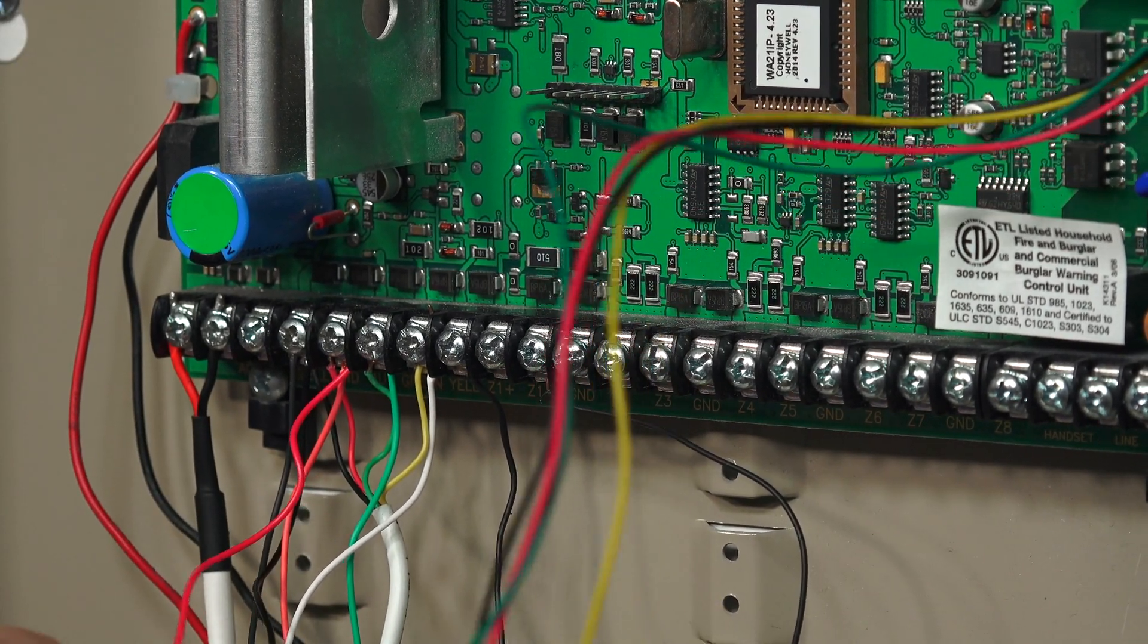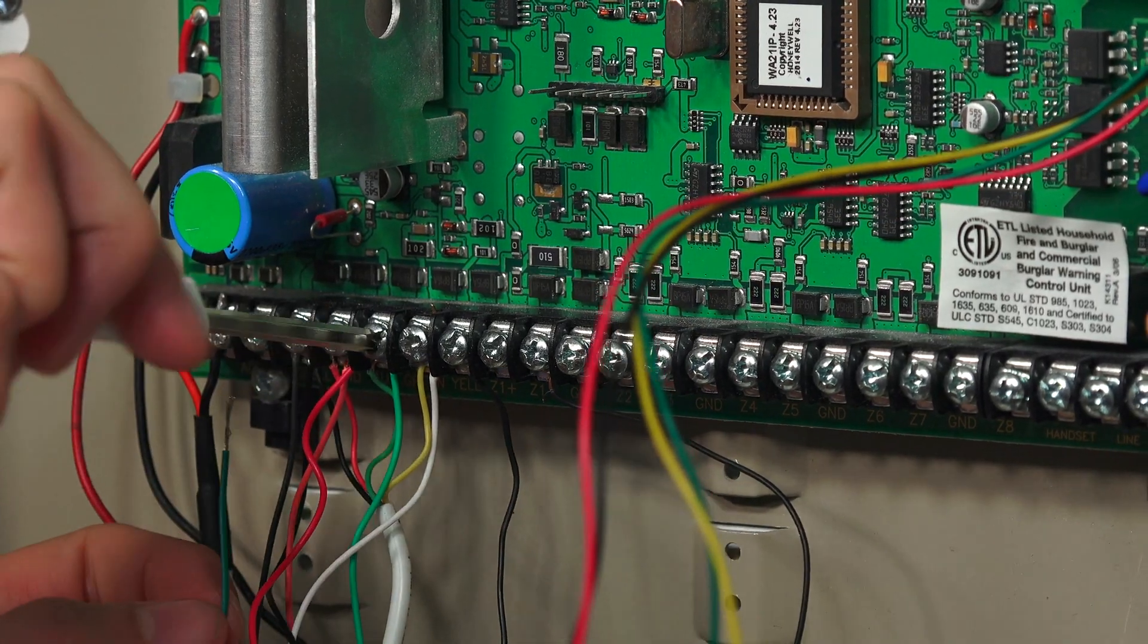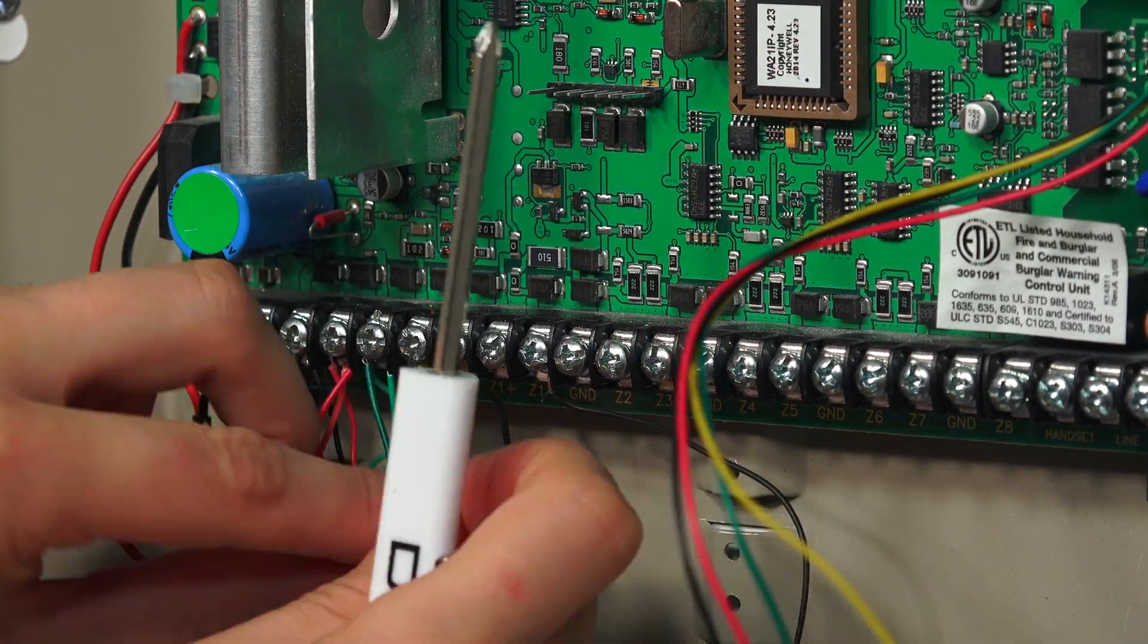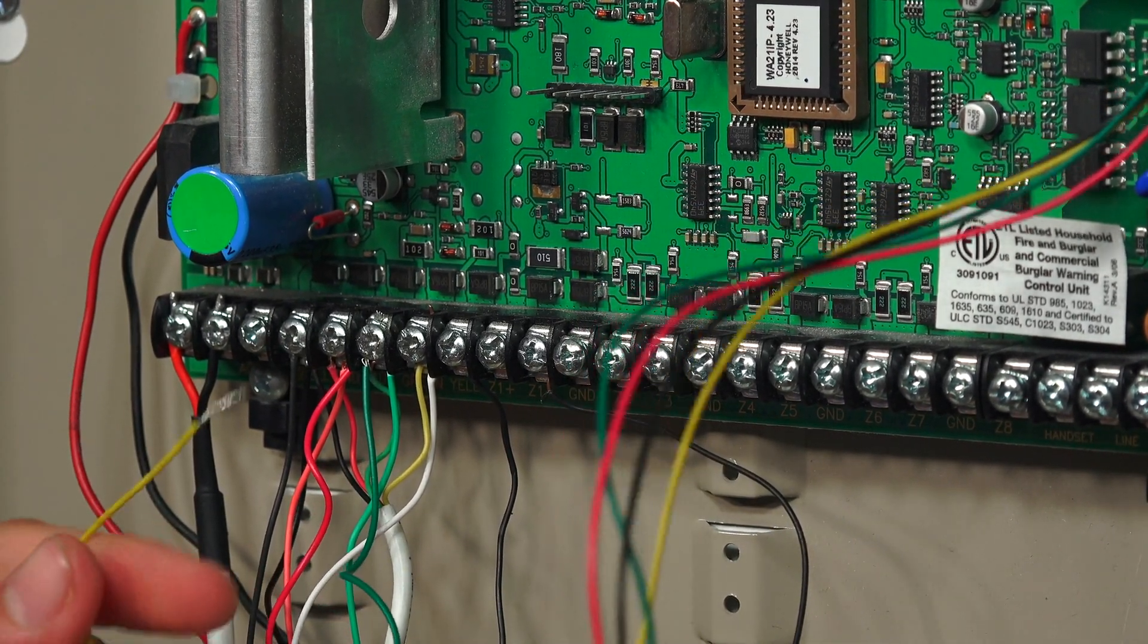And then we have the green wire, which goes to terminal six. This is one of the data connection wires. And last, we have the yellow wire, which goes to terminal seven.